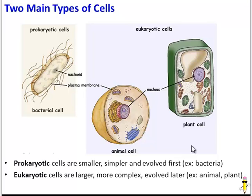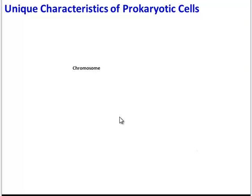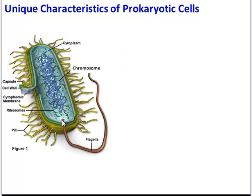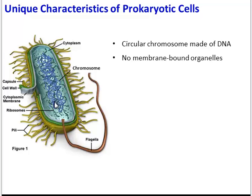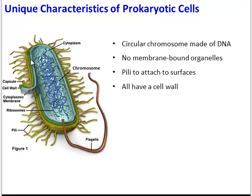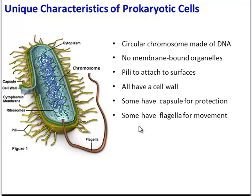Now let's look at some details of those two types of cells. Unique characteristics of prokaryotic cells: if we look closely at this bacterium, we can see there is a big circular chromosome in the middle of the cell. There are no membrane-bound organelles — no nucleus, no chloroplasts, no mitochondria, nada. There are, however, these little projections called pili, which are used to attach to surfaces. All have a cell wall for protection, some have an additional layer called a capsule, and some might have a tail or a few tails called flagella for movement.